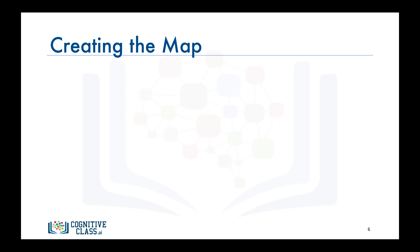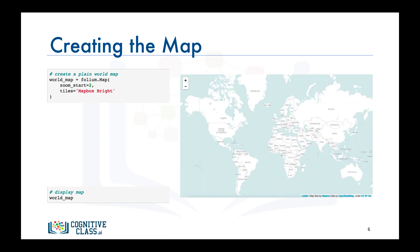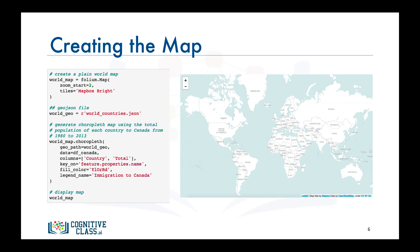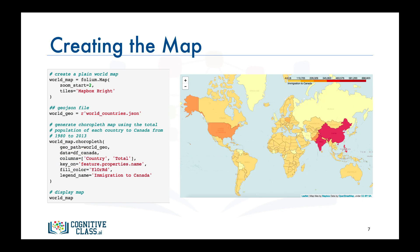We should be experts now in creating world maps with Folium. Let's create a world map using the map box bright tile set, which displays a nice world map with the name of every country. To convert this into a choropleth map, we first define a variable pointing to our GeoJSON file, then apply the choropleth function to our world map, telling it to use the columns country and total in df_canada, and to use country names to look up geospatial information in the GeoJSON file. And there you have it — a choropleth map showing the intensity of immigration from different countries worldwide.